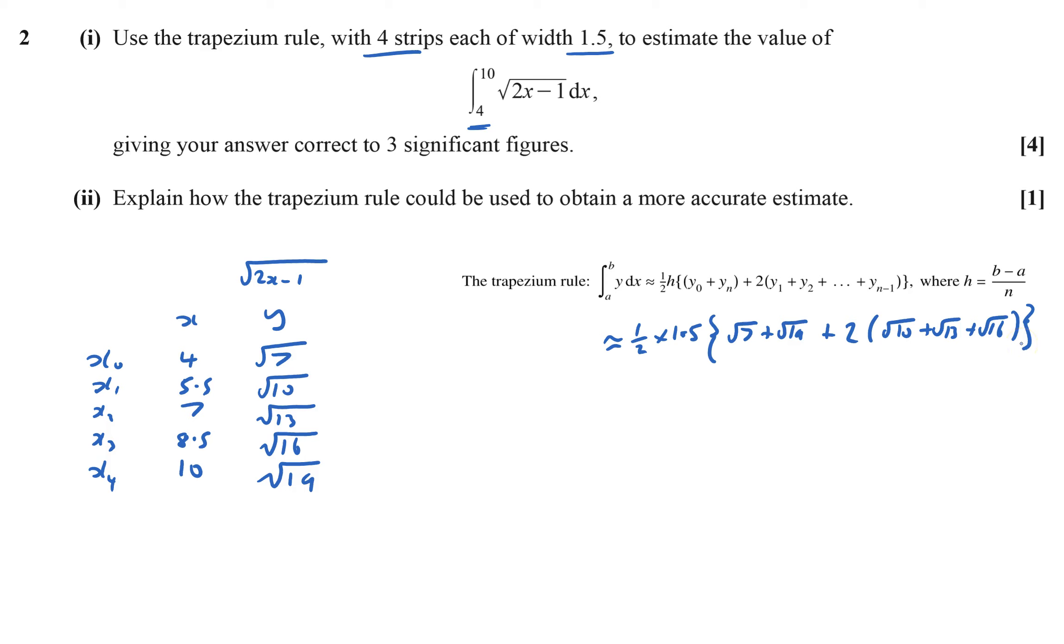And that just means I have to plug it into the calculator. And that equals 21.405. So that's three significant figures. So that equals 21.4 to three significant figures.